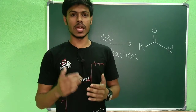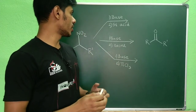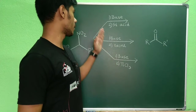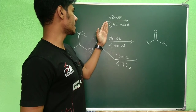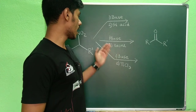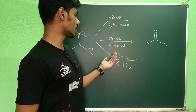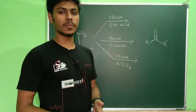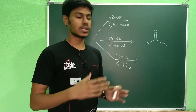There are three important pathways by which you can do the Nef reaction. The first uses a base in step one and a strong acid in step two. The second procedure again uses a base in step one but uses oxone in step two. The third is the reductive pathway which uses titanium trichloride.